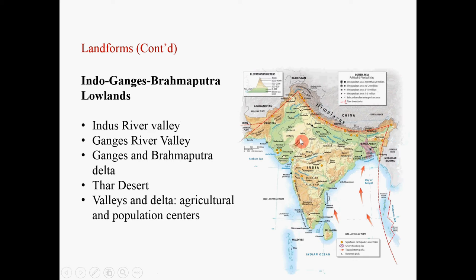Then you have the Thar Desert — some people also call this the Great Indian Desert. These valleys and the delta are important areas for agriculture, and there are a lot of important population centers in this region. They are the important core areas of Pakistan, India, and Bangladesh.